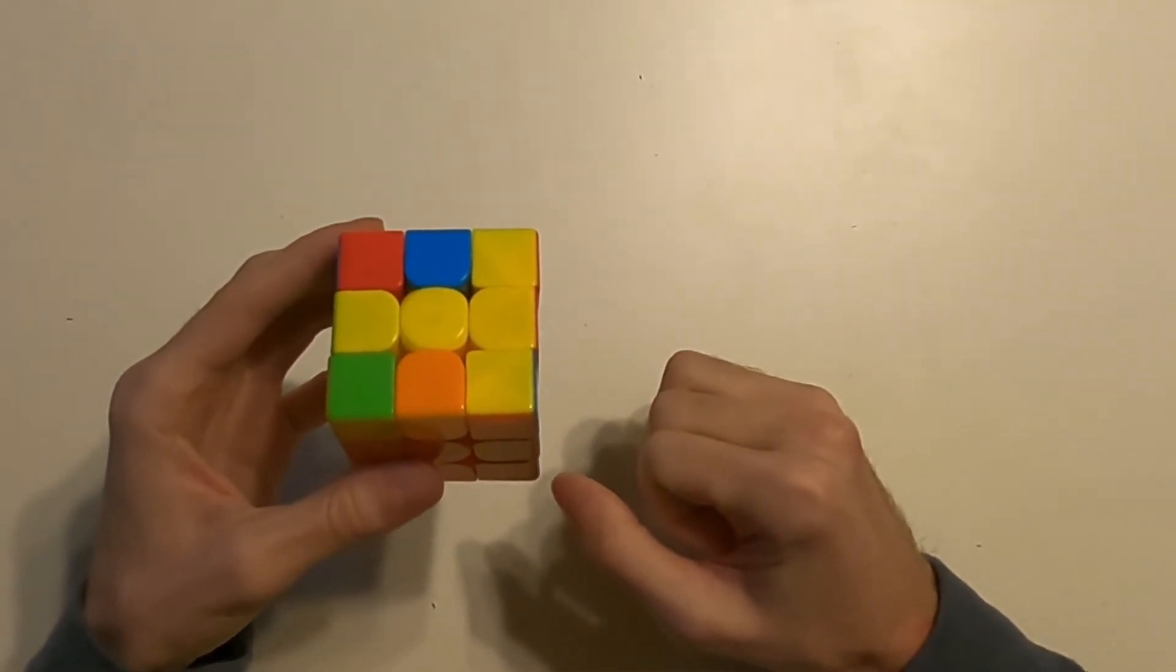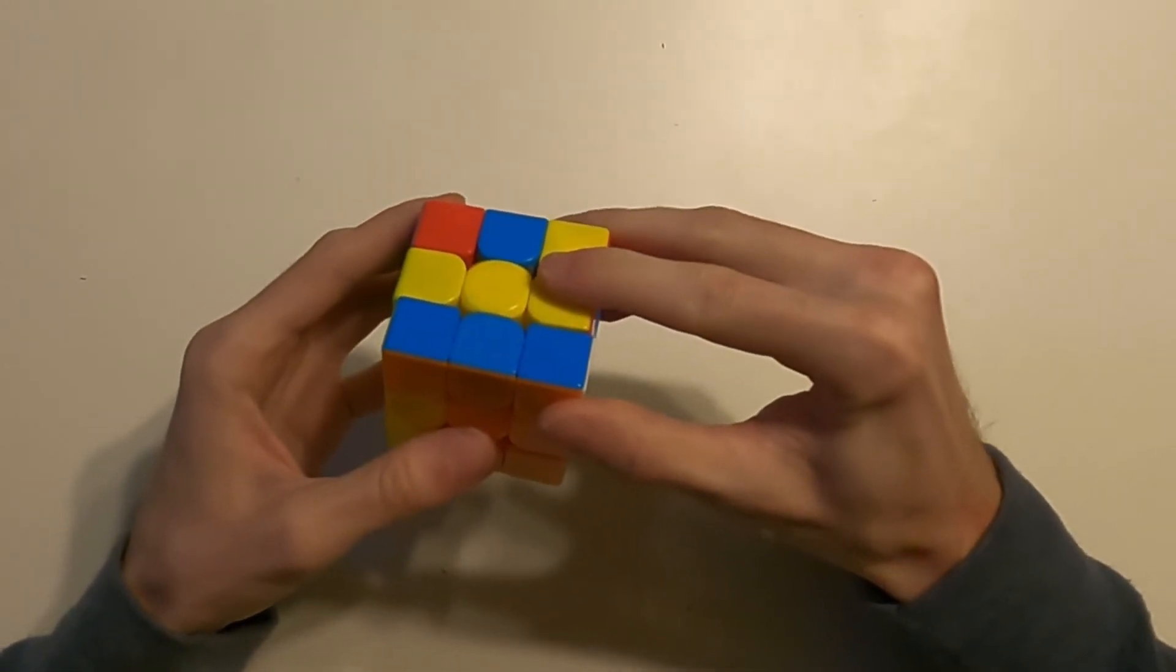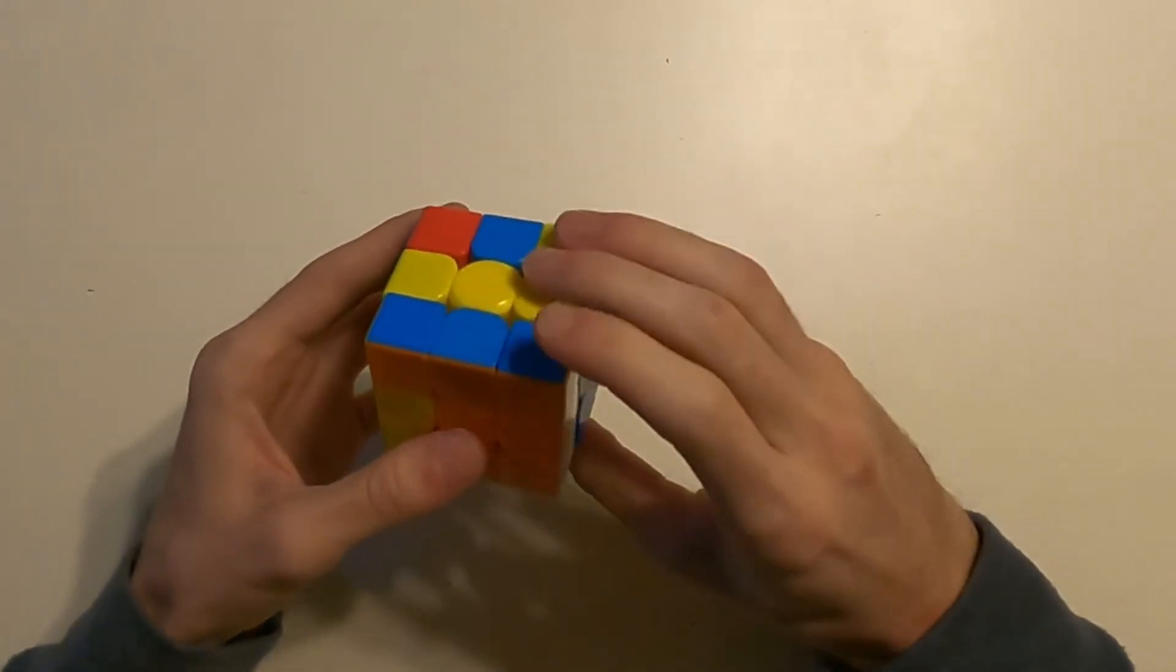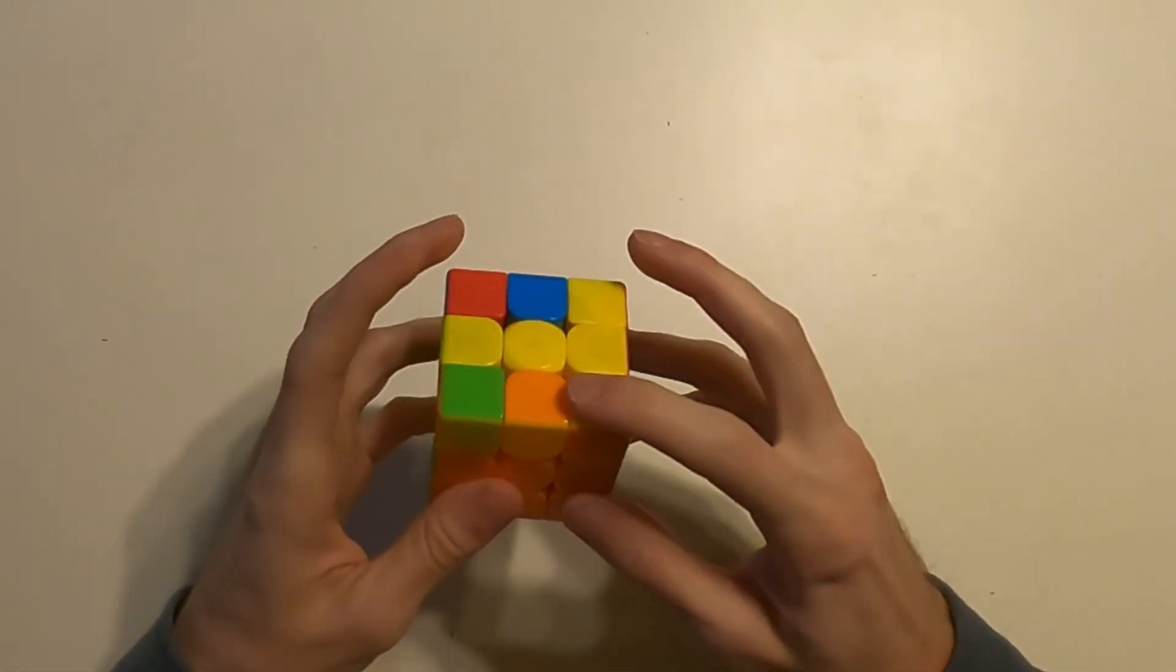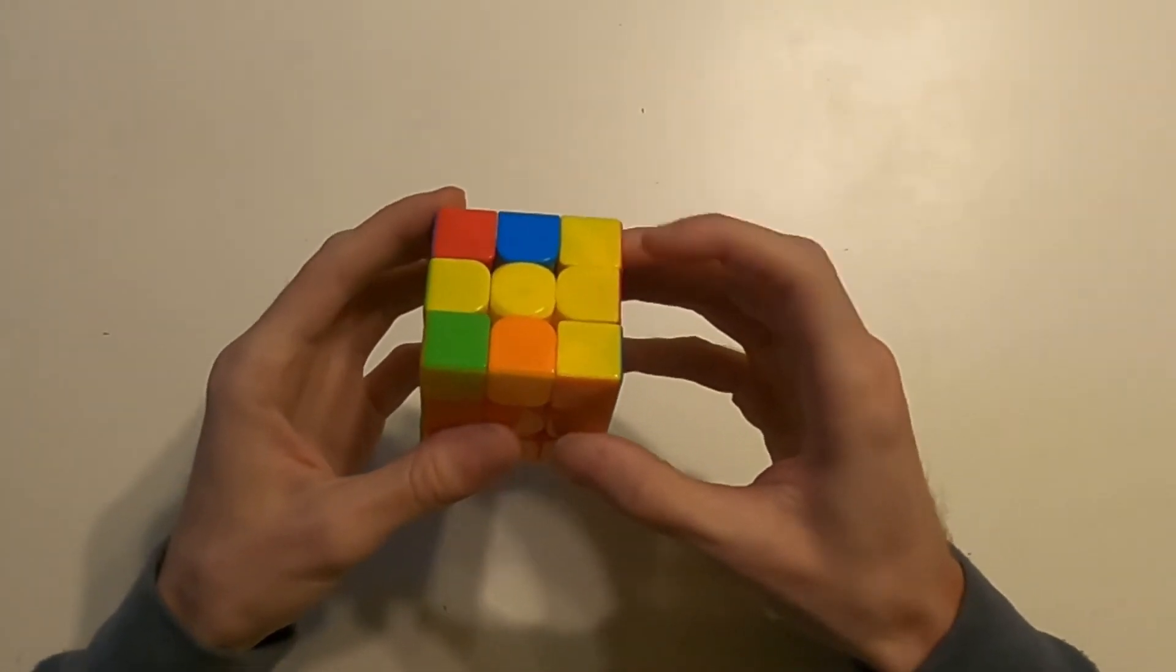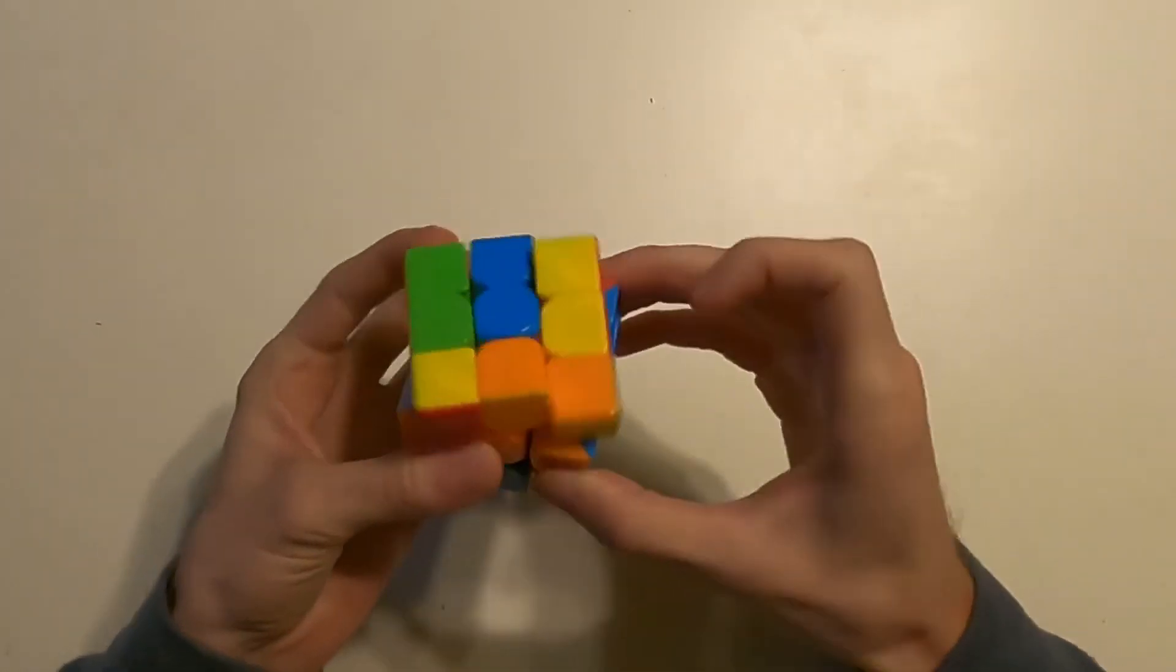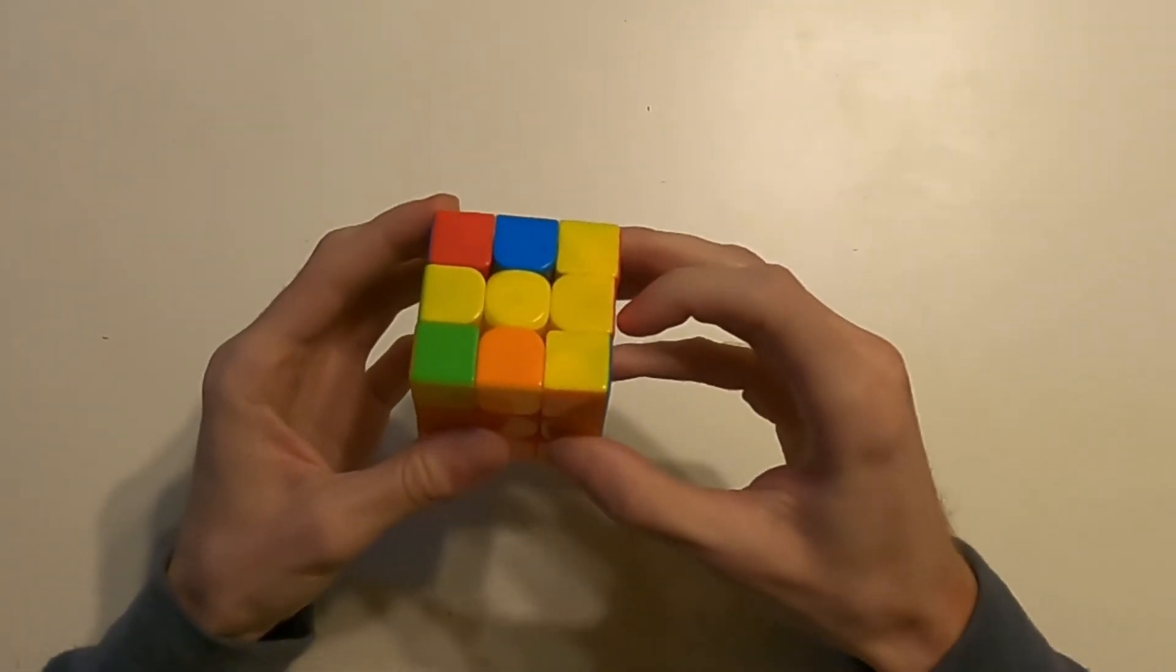The one thing I would recommend is for the F-prime, avoid using the thumb. I found that when I use the thumb, it's harder to do the S move at the end of the algorithm. You can either use your left pointer finger or your right pointer finger. With the left pointer finger, it'll look like this, and with the right pointer finger, it'll look like this.